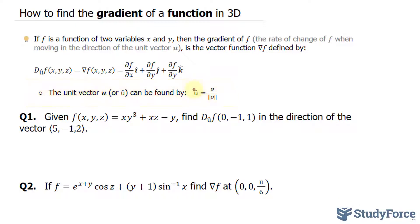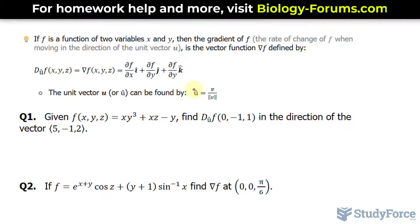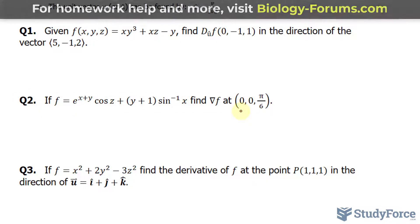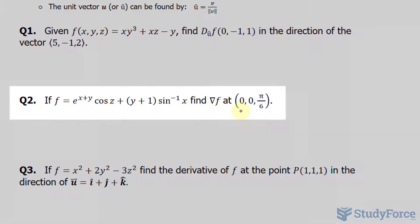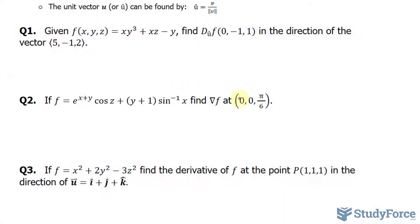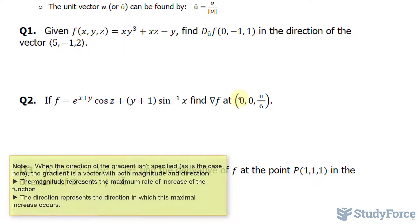The magnitude can be found using a variant of the Pythagorean theorem. We have questions 1 through 3 shown on your screen, but we'll start with a simple one — question 2. Here we're asked to find the gradient of our function f evaluated at the point (0, 0, π/6). The reason this is easier than questions 1 and 3 is because they don't give us a vector here — they just want us to evaluate the gradient function at this point.